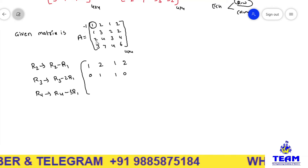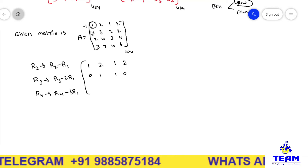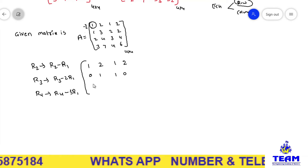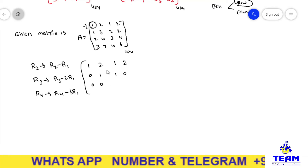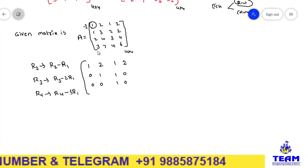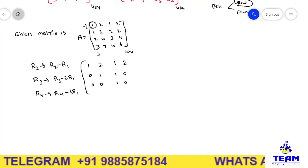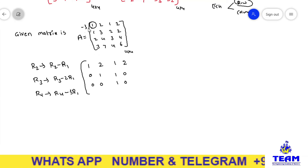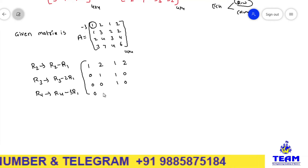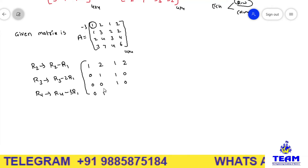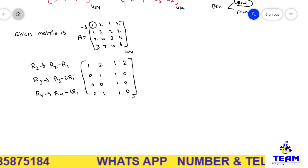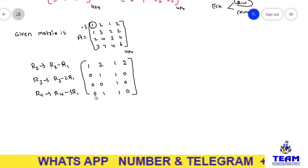First row remains unchanged. Second row: 1 minus 1 is 0, 3 minus 2 is 1, 2 minus 1 is 1, 2 minus 2 is 0. Third row (R3 − 2R1): 2 minus 2 is 0, 4 minus 4 is 0, 3 minus 2 is 1, 4 minus 4 is 0. Fourth row (R4 − 3R1): 3 minus 3 is 0, 7 minus 6 is 1, 4 minus 3 is 1, 6 minus 6 is 0. Now below the diagonal elements are all zero.